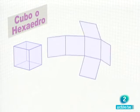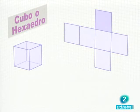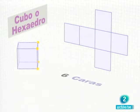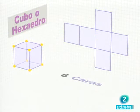El cubo tiene seis caras. Cuatro laterales, una arriba y otra abajo. Ocho vértices. Cuatro arriba y cuatro abajo. Y doce aristas. Cuatro arriba, cuatro abajo y cuatro laterales.